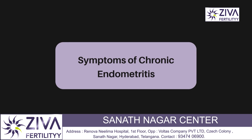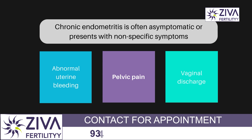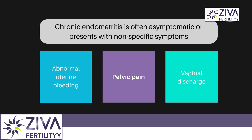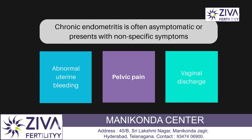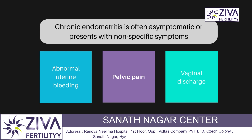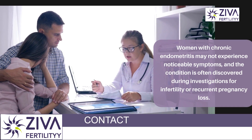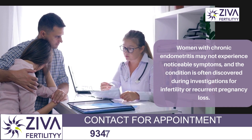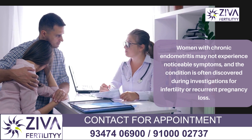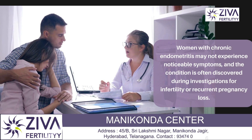So what are the symptoms? Often chronic endometritis is asymptomatic or presents with non-specific symptoms, which may include abnormal uterine bleeding such as intermenstrual spotting or post-coital bleeding, mild and chronic pelvic pain, and unusual or persistent vaginal discharge. Many women with chronic endometritis may not experience noticeable symptoms, and the condition is often discovered during investigations for infertility or recurrent pregnancy loss.